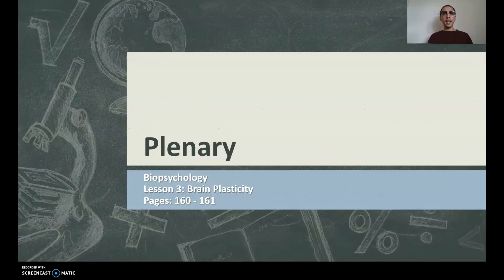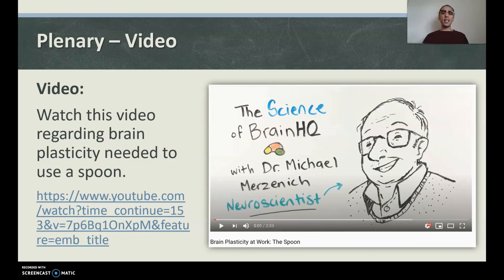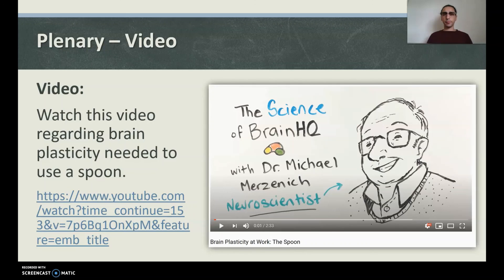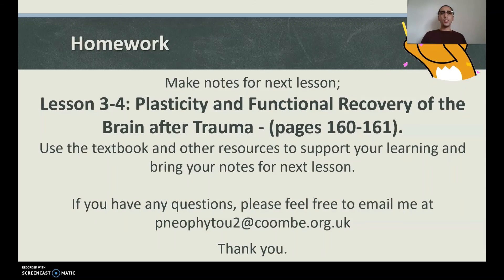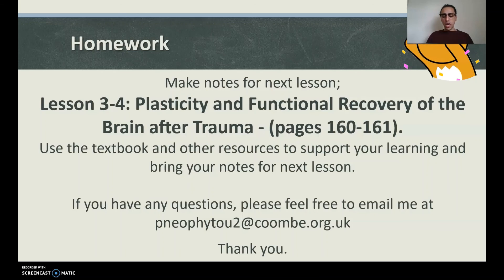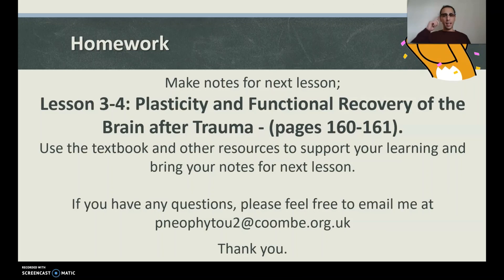Plenary: I'll go easy on you — we have a video for the plenary. Watch this video regarding brain plasticity. Something as simple as using a spoon to eat seems like a really simple task, but you actually need so many different parts of the brain to do it. Watch the video — it's really interesting. And that was Lesson 3. Thank you for joining today — we learned a lot. Be sure to write up your notes. Well done, my Neo Psychologists. Great work today as usual. I've been Mr. Neo — God bless and peace.